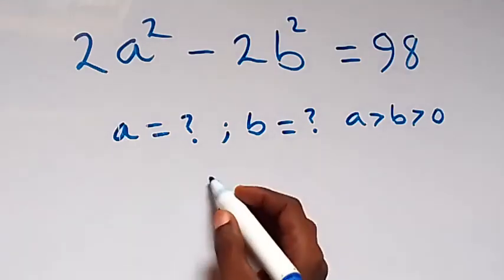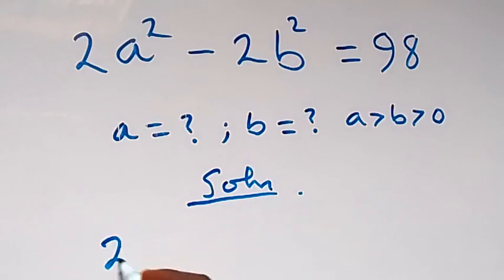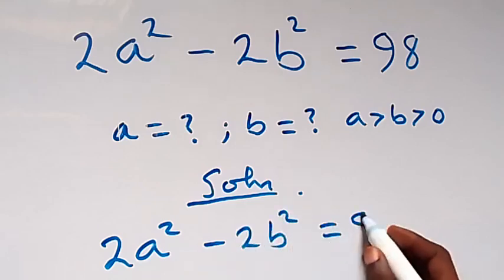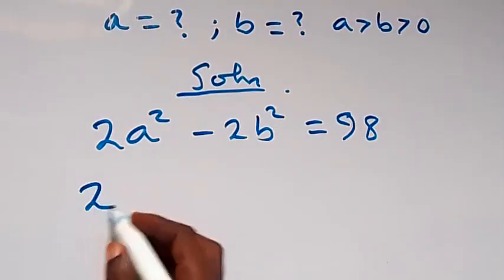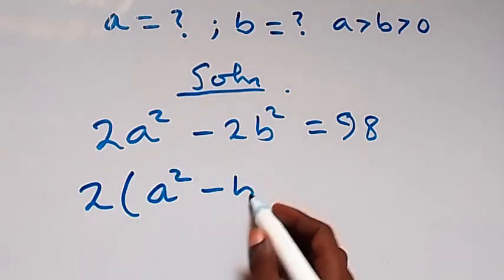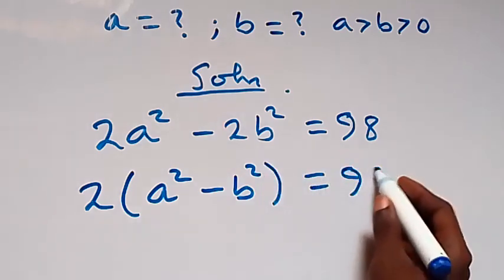From here, we have 2a squared minus 2b squared equals to 98. Then we can factor 2 out here and this becomes 2 into bracket a squared minus b squared equals to 98.